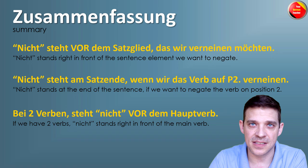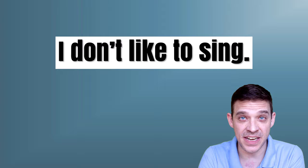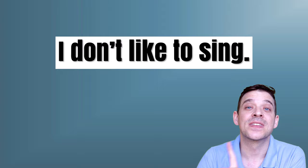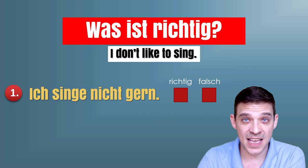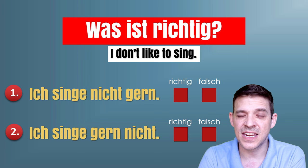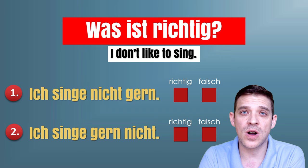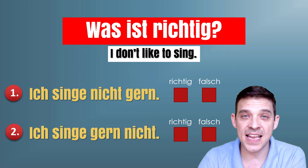Hausaufgaben — you have homework! It's going to be a tricky one. The sentence 'I don't like to sing' translated into German — was ist richtig? Number 1: 'Ich singe nicht gern.' Or number 2: 'Ich singe gern nicht.' Both sentences are correct but the meaning is a little bit different and there is only one proper translation for 'I don't like to sing.' Let me know down in the comments which answer is correct — eins oder zwei?